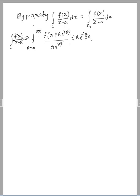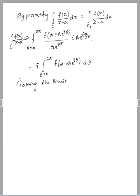By cancellation law, we can cancel r e power i theta and r e power i theta as they are common terms. So you are left with i times integral from theta equal to 0 to 2 pi of f of a plus r e power i theta d theta. There is no term r on the left hand side.